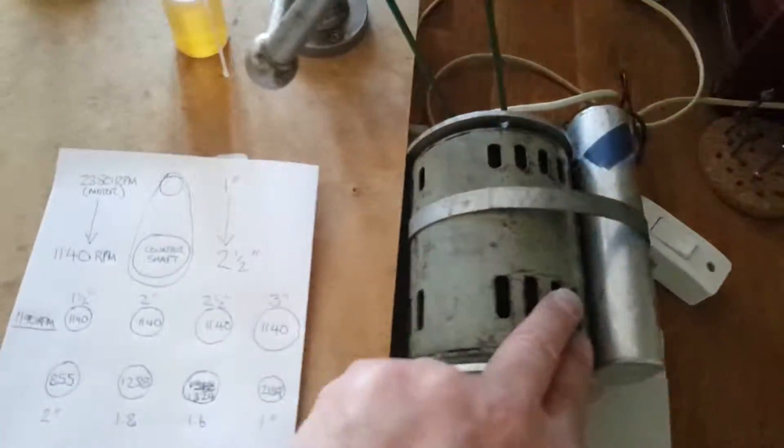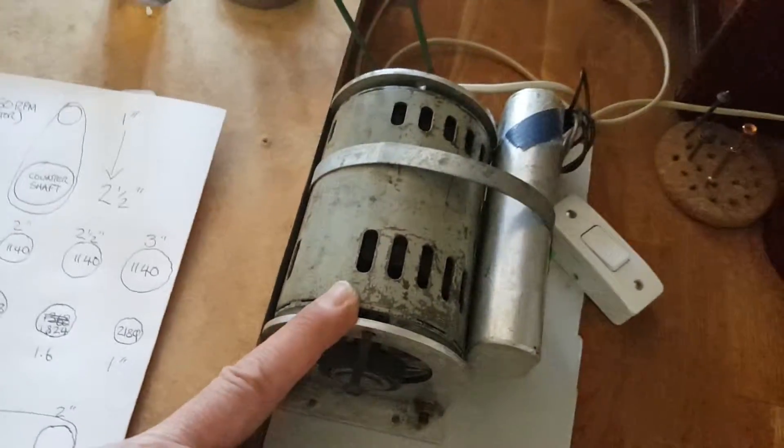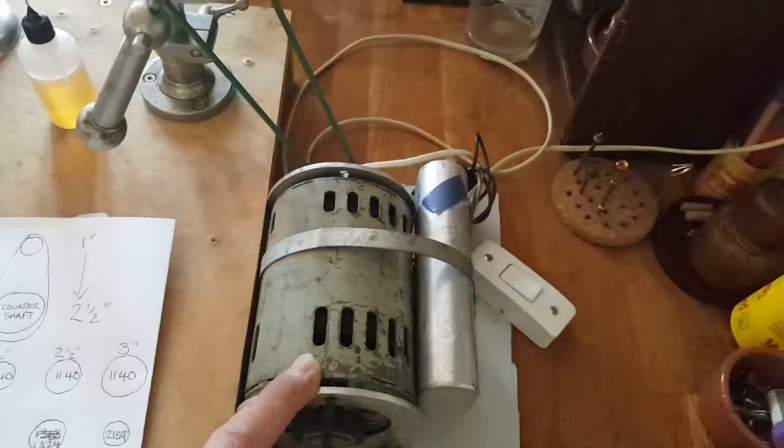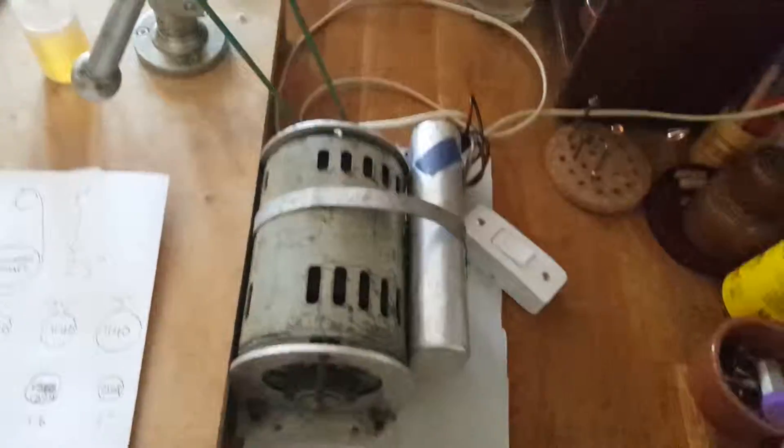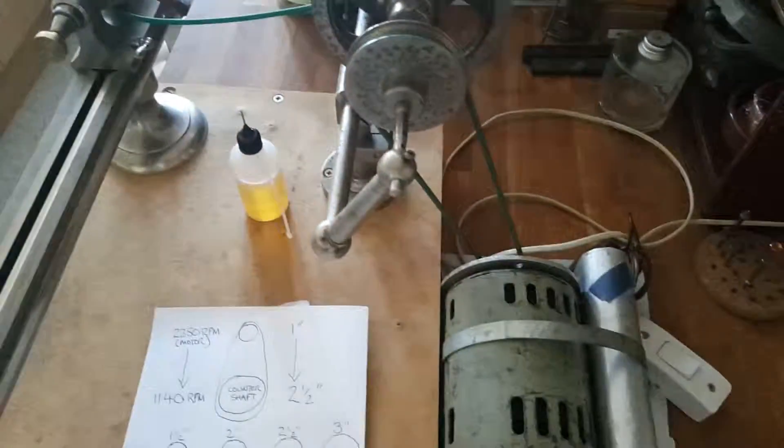And there you go. So 2,850, sixth of a horsepower motor, big capacitor, they all have this, running the counter shaft, and then the lathe.